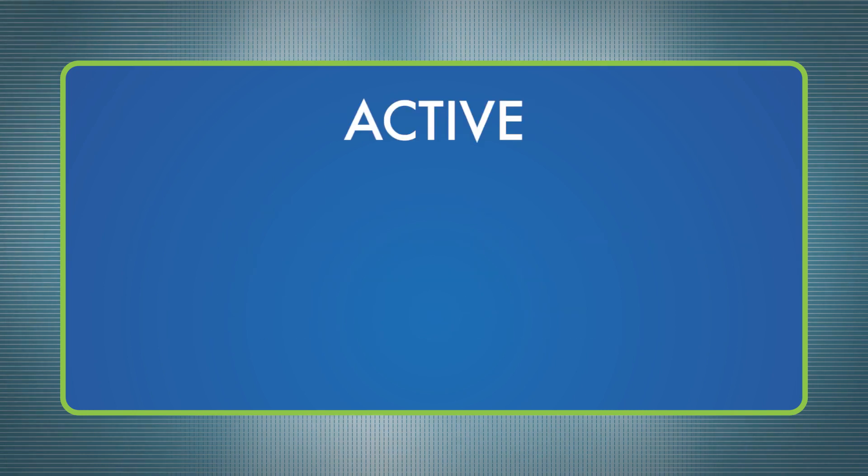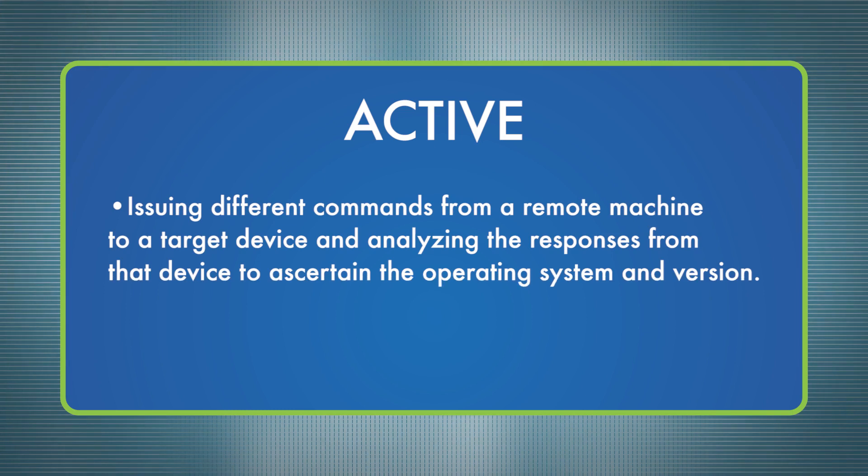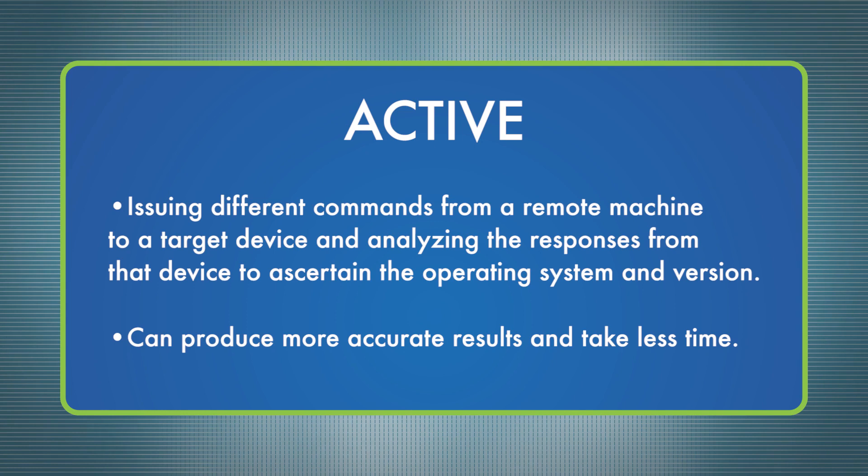The active OS fingerprinting method involves issuing different commands from a remote machine to a target device and analyzing the responses from that device to ascertain the operating system and version. Active fingerprinting can produce more accurate results and take less time. It's important to note that active fingerprinting tools include Nmap.